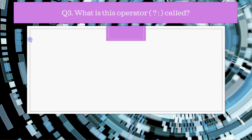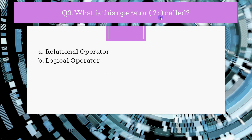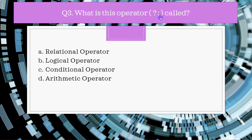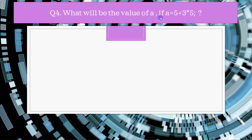Question three: what is this operator called? It is the question mark and colon sign — what do we call this operator? The correct answer is it's the conditional operator. It is used to check conditions: we write a condition, then a question mark. If the condition is true, the first statement executes; otherwise the statement after the colon executes. That's why we call it the conditional operator. This is the only ternary operator, which works on three operands.